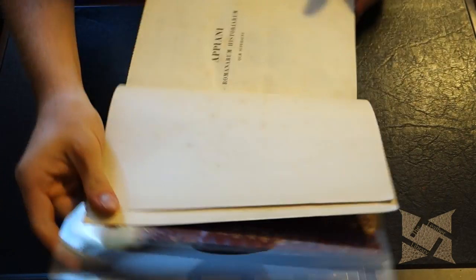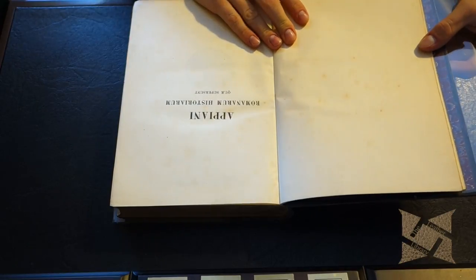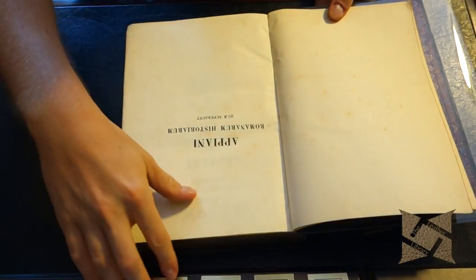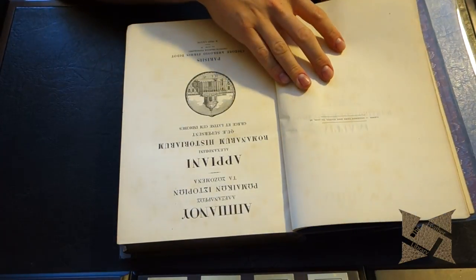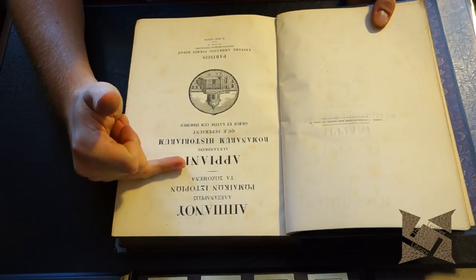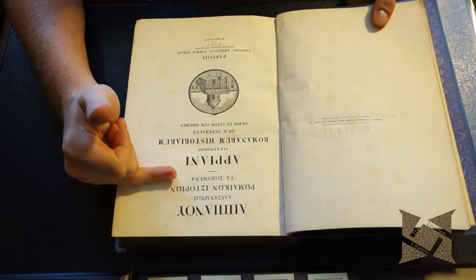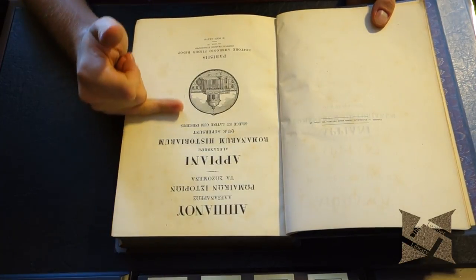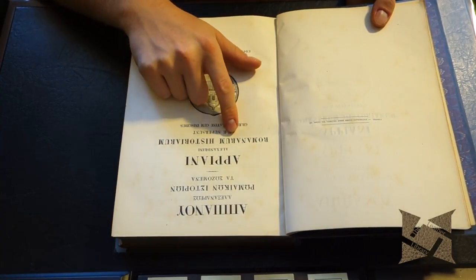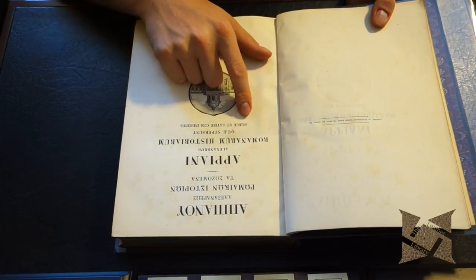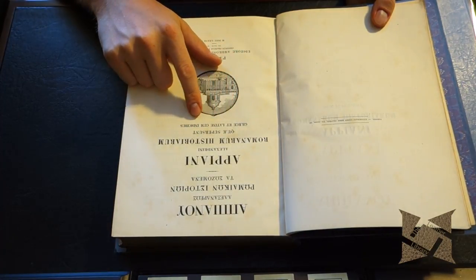It's Apiani Romanarum Historium Quae Supersunt. And then open up here and we have the Greek text here, and I'll explain that to you, and then we have the matching Latin text. Apiani Alexandrini Romanarum Historium Quae Supersunt Graece et Latine cum Indicibus.